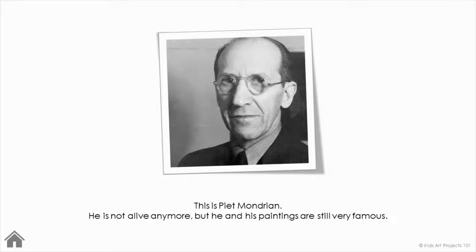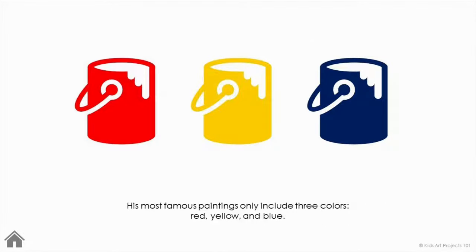This is Pete Mondrian. He's not alive anymore, but he and his paintings are still very famous. His most famous paintings only include three colors: red, yellow, and blue.